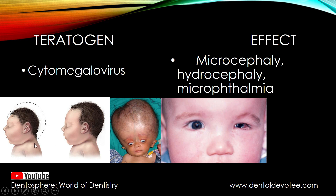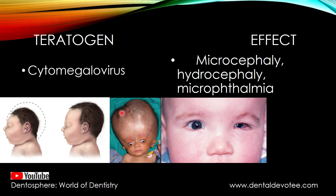The next teratogen is cytomegalovirus infection during pregnancy. It may cause microcephaly, hydrocephaly, and micro-ophthalmia. In the first picture, microcephaly is shown — the normal skull size is reduced, which also hinders the development of the brain. The skull size is small in microcephaly.